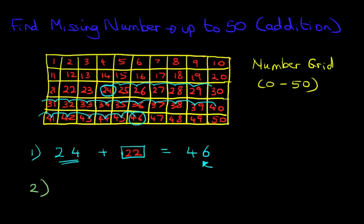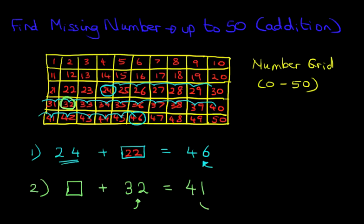This time we've got something plus 32 equals 41. Now using the same principles, our first step is to find 32 on the number grid. Can you find 32? It's over here — that's 32. And we have to end at number 41, so let's find 41. It's over here.